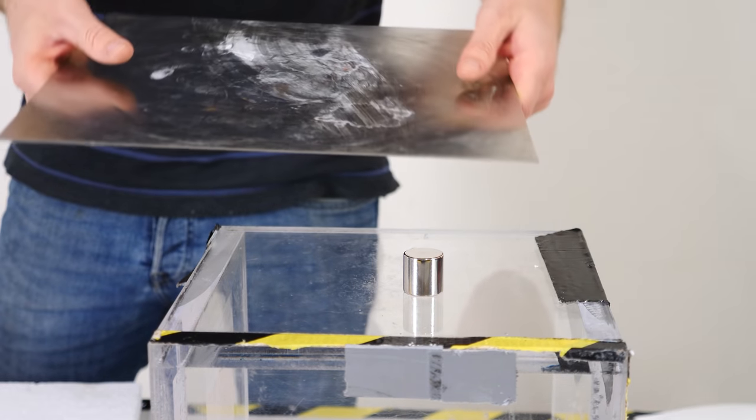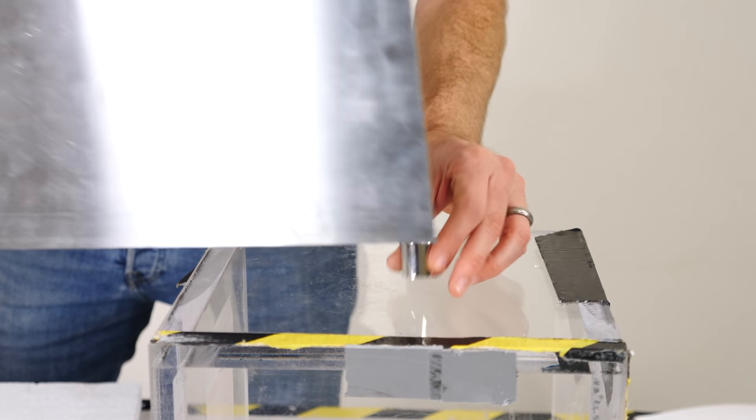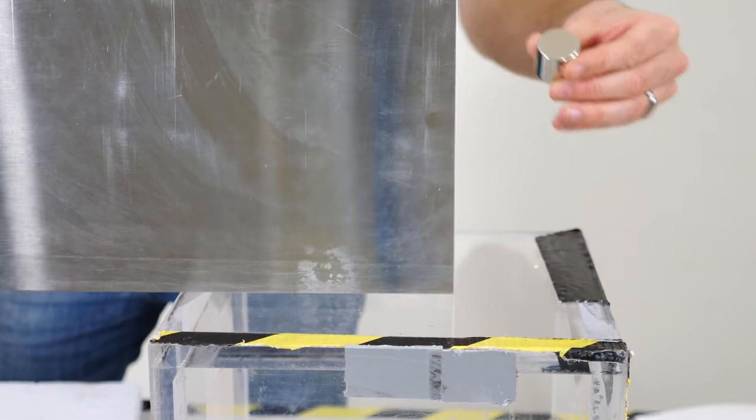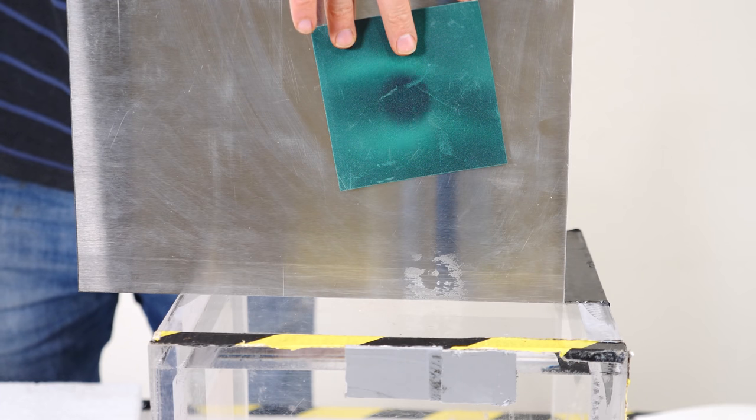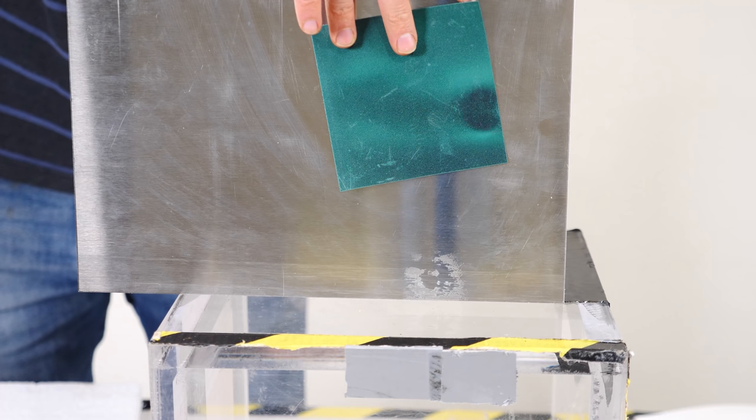So first let's take this sheet of non-ferromagnetic metal here. You can see the magnet does not stick to it, but you can see the magnetic field easily penetrates this, so I wasn't able to block the magnetic field here.